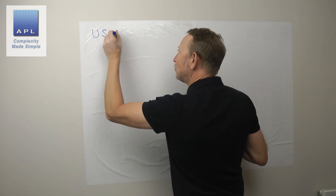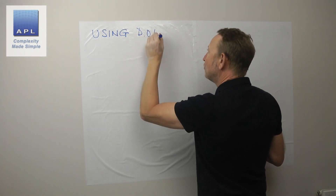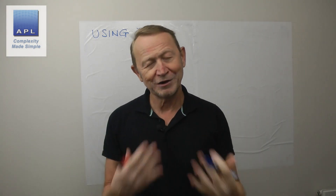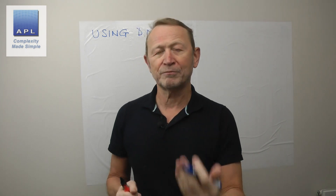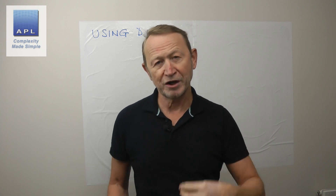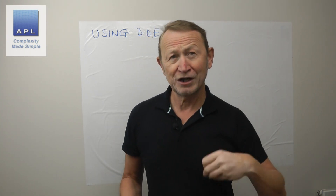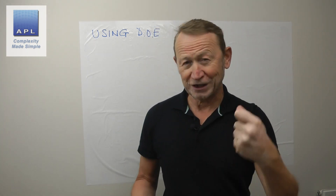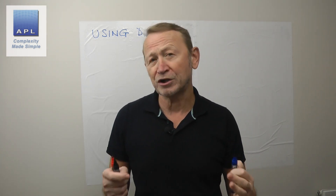So often when you do an MSA you get a bad result, and then what you've got to try and do is improve the methodology that you're using. Sometimes that means writing quite specific standard operating procedures, restricting the equipment that you use, enforcing calibration routines — all sorts of things that could be quite costly.